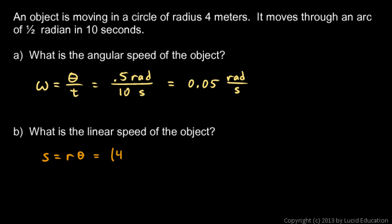We're given the radius is 4 meters. So it's 4 meters times 0.5, 0.5 radians, and 4 times 0.5 comes out to 2. So 2 meters is the distance. And then you can say velocity is distance over time.